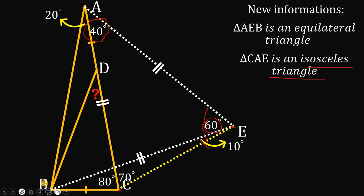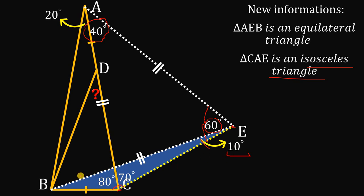Now let's focus on triangle BEC. The angles inside any triangle must add up to 180 degrees. We have 10 degrees here, and 80 plus 70 — which is 150 degrees — here. The total so far is 160, therefore this angle right over here must be equal to 20 degrees.